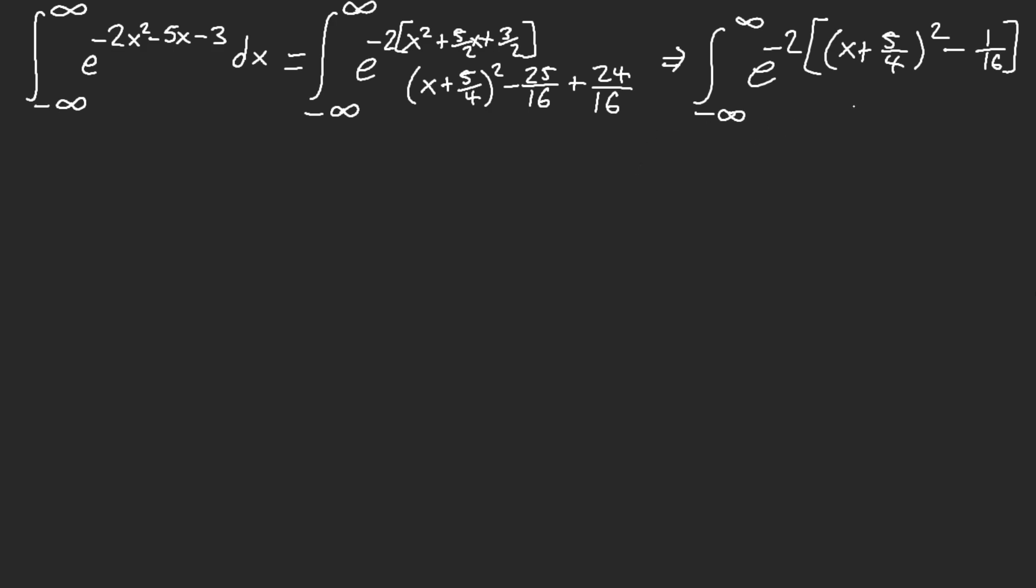Okay. Well in that case we'll go ahead and distribute it back. Just distribute it back, we get negative 2 x plus 5 fourths squared. And then here we get like plus 18 technically. I'm sorry, no no no. 2 over 16, that's 1 eighth. So we get 1 eighth.